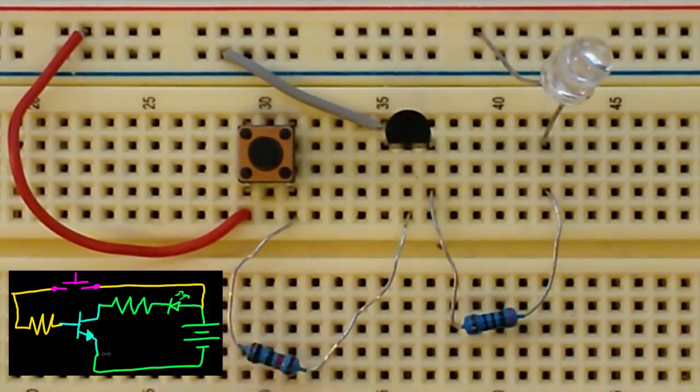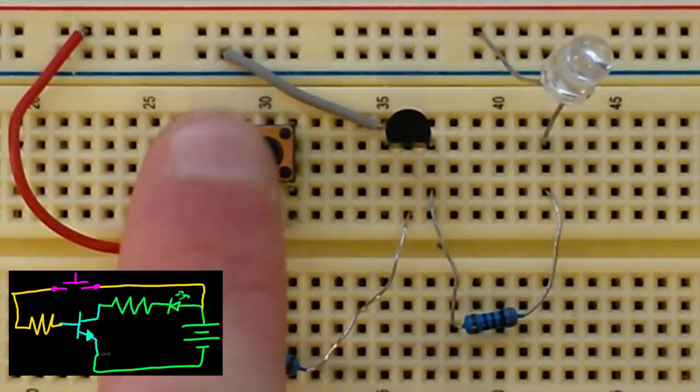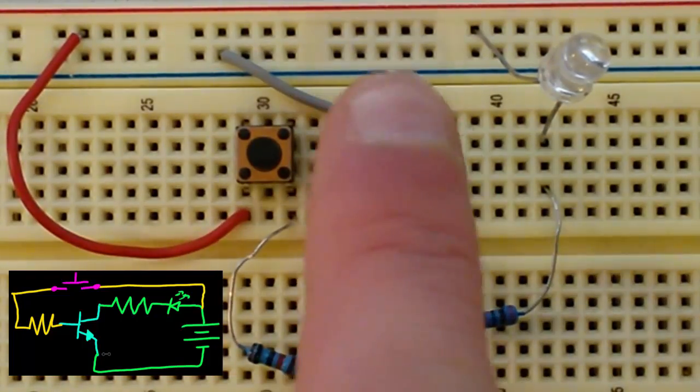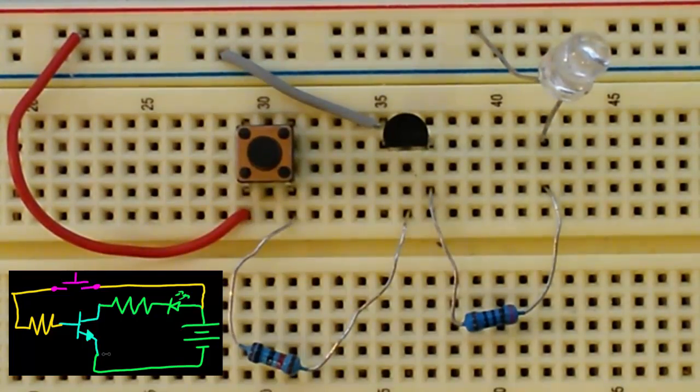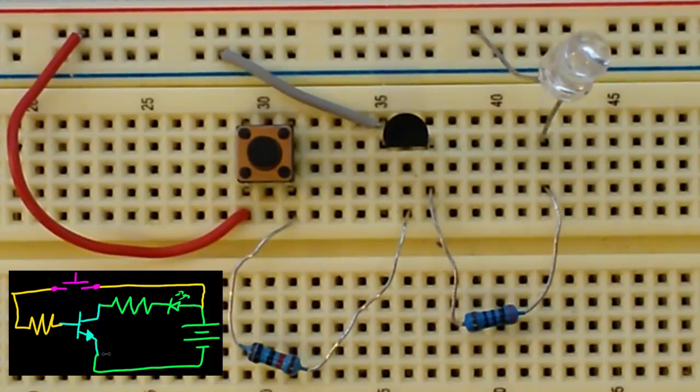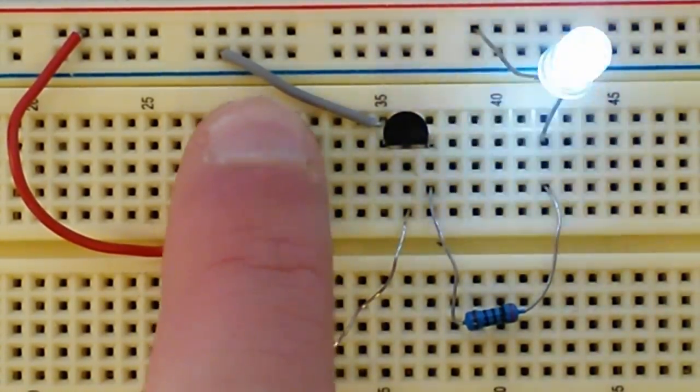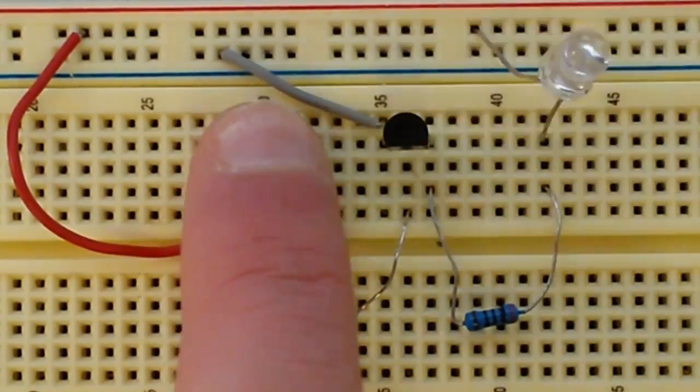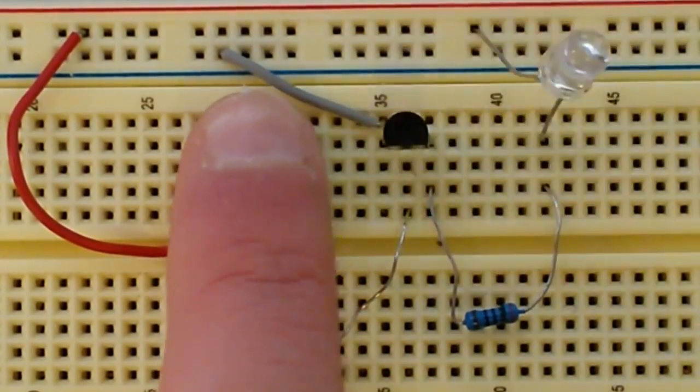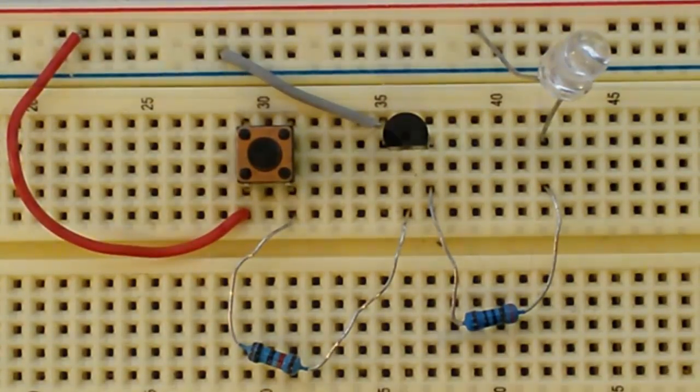But anyways, we want to have a high value resistor right here. So if we press the button, we will allow a small amount of current to flow to the base of the transistor, which should hopefully allow electricity to flow from the collector transistor to the emitter, allowing this LED to turn on, which it does. So very similar to the relay circuit we had, when we press the button, we activate the transistor, allowing the LED to light up.